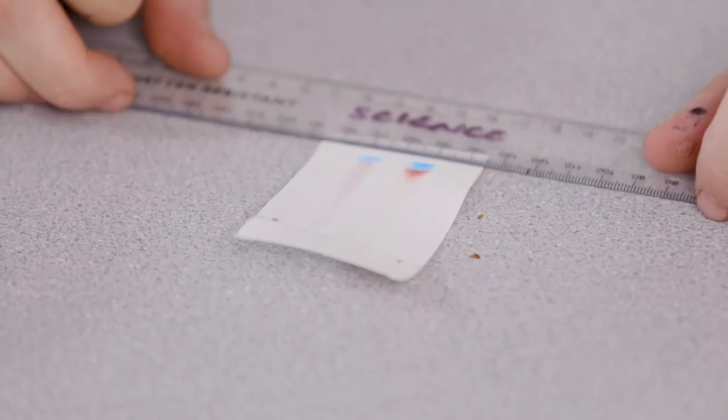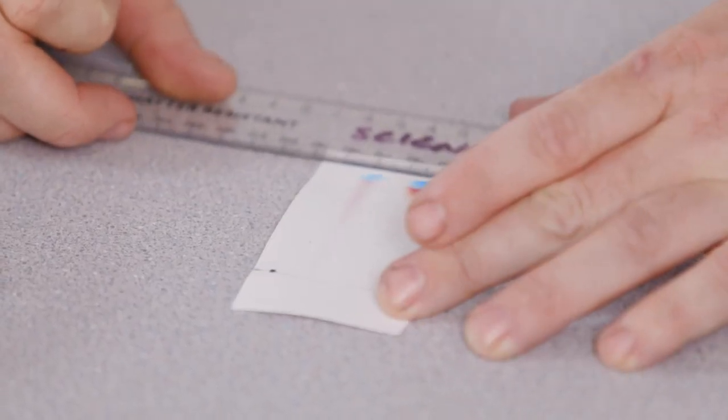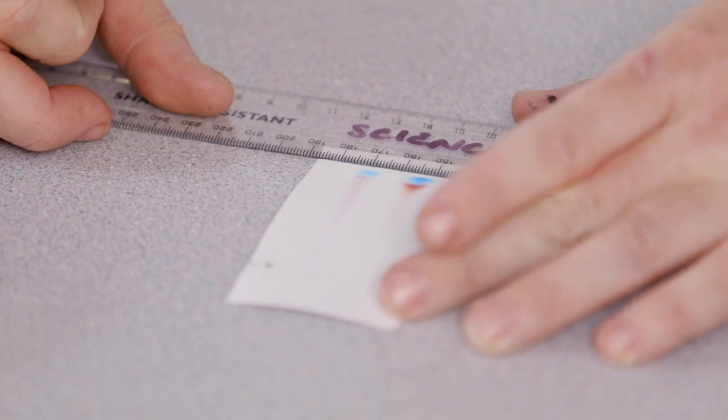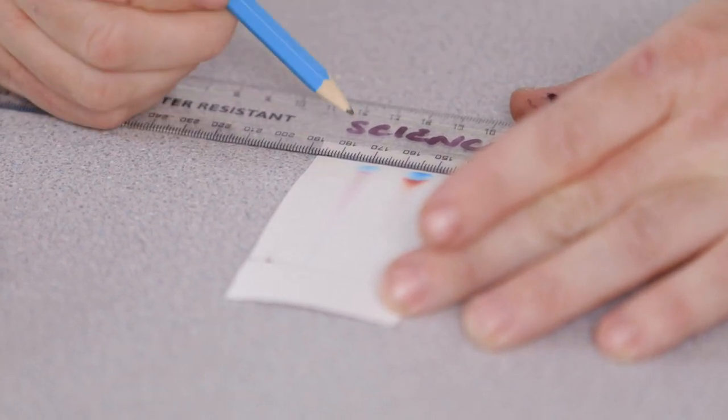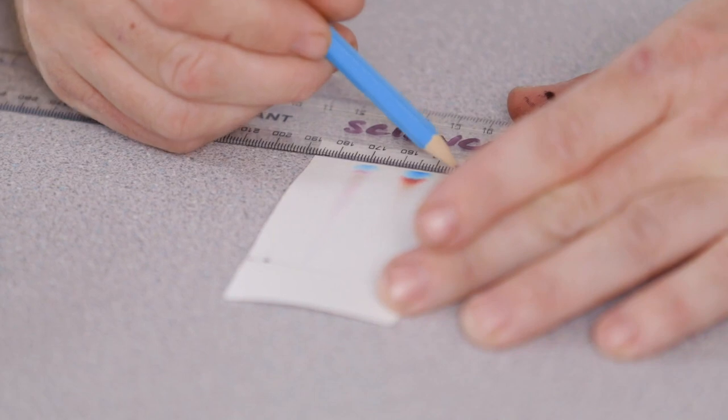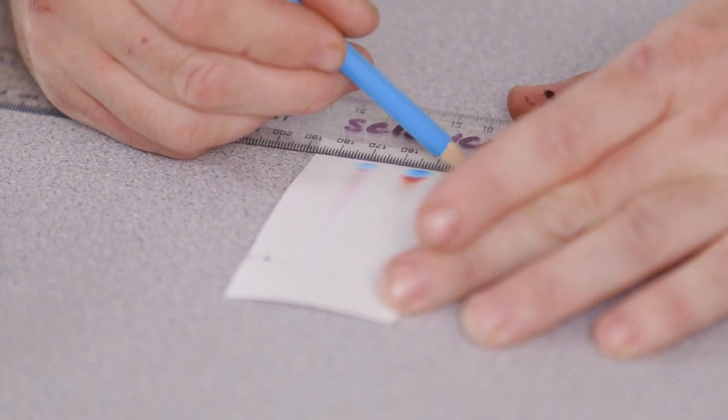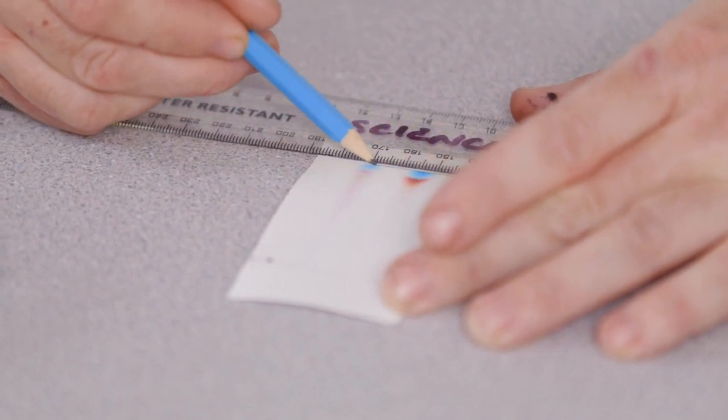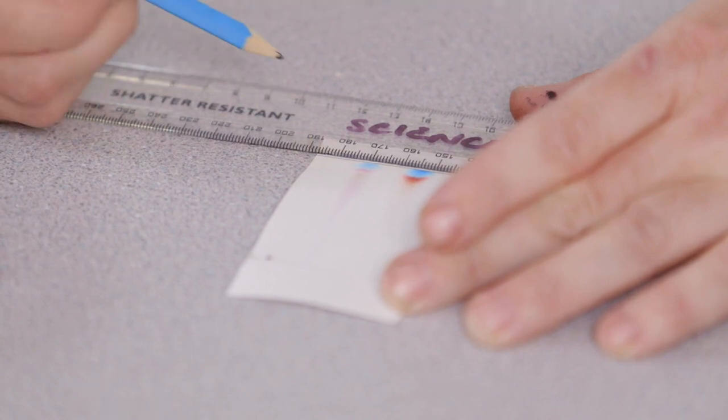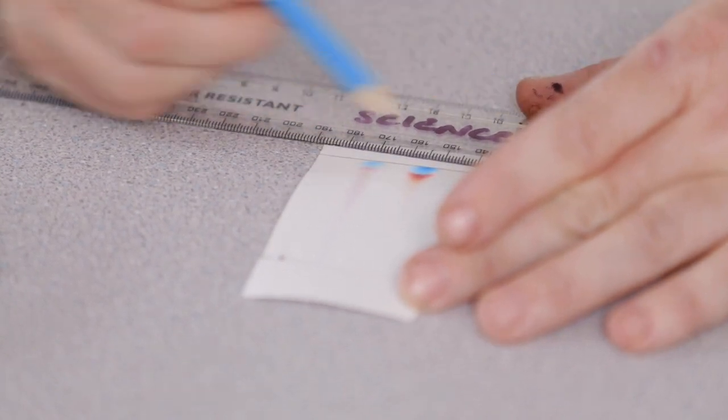Now, on the chromatogram, we're going to mark some key areas. First of all is the solvent front. And you can see the solvent front is the furthest point at which the water has risen up the chromatogram. And I'm going to mark that across the top.